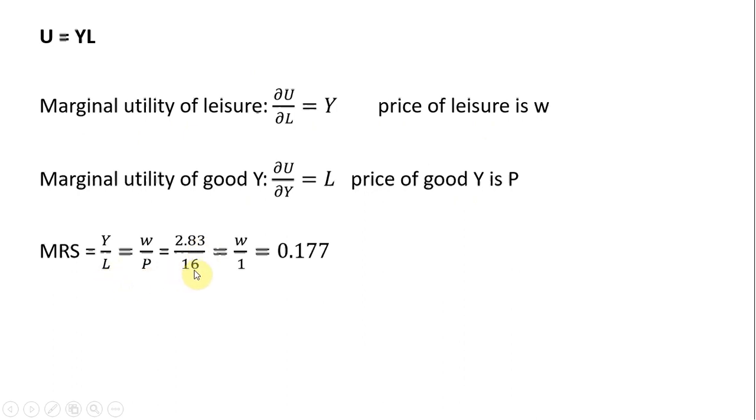That was the optimal hours of leisure for Robinson. And then what we'll do, we'll normalize the price of good Y to equal 1. And that means the wage here, the implied wage here, is 0.177. So that would be the Walrasian price in equilibrium. The wage is 0.177, and then the price of good Y is 1, normalized to be 1.